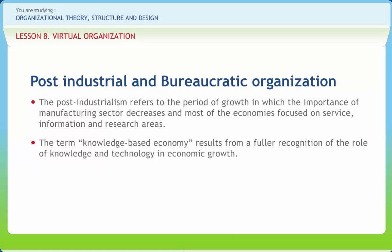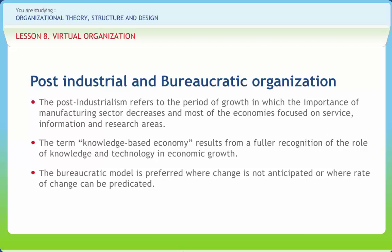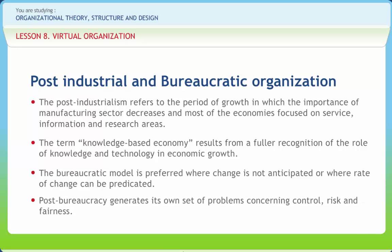A bureaucracy is a form of organizational structure in which people can be held accountable for their actions, because they are required to act in accordance with well-specified and agreed-upon rules and standard operating procedures. Weber believed bureaucracy could assist organizations and proposed organizational characteristics to ensure efficient functioning in both government and business settings. The bureaucratic model is preferred where change is not anticipated or where the rate of change can be predicted. Post-bureaucracy generates its own set of problems concerning control, risk and fairness, and is used in two senses in the organizational literature — one generic and one much more specific. Weber's bureaucratic model can serve equally well in analyzing either the functional or dysfunctional ramifications of organizational structure.